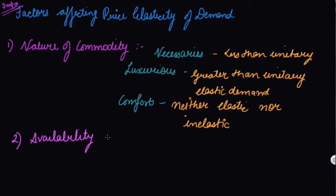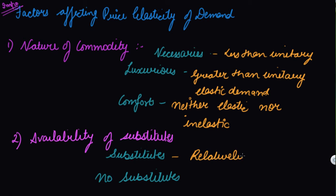Second are substitutes. If the commodity has its substitute in the market, then the elasticity of demand is relatively more elastic because you will shift to that commodity which is cheaper. So substitutes, you are relatively more elastic just because people will shift from one commodity to other.